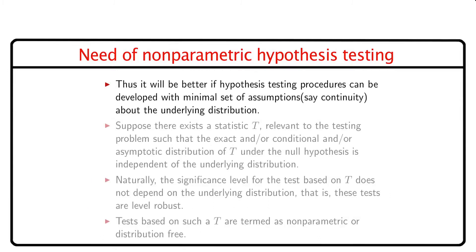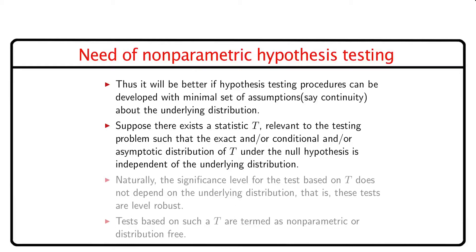Thus, it will be better if hypothesis testing procedures can be developed with a minimal set of assumptions like continuity or symmetry about the underlying distribution. Suppose there exists a statistic t relevant to the testing problem such that the exact, conditional, or asymptotic distribution of t under the null hypothesis is independent of the underlying distribution. Naturally, the significance level for the test based on t does not depend on the underlying distribution. That is, these tests are level robust.